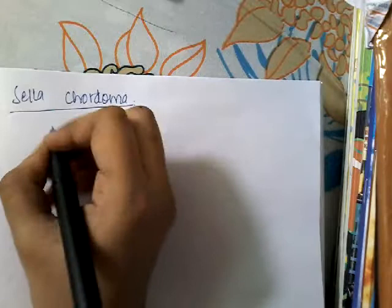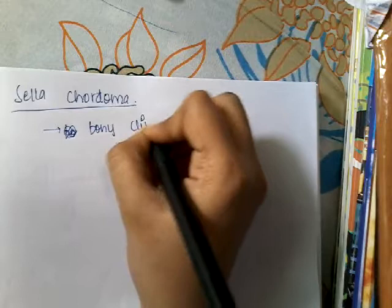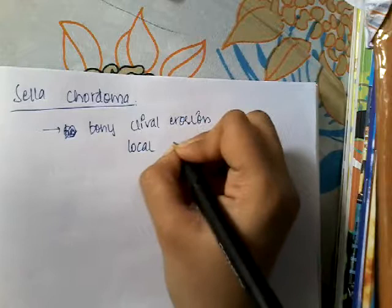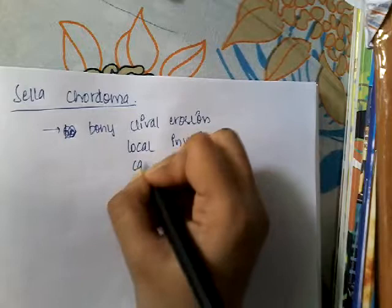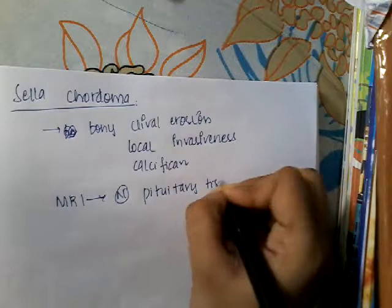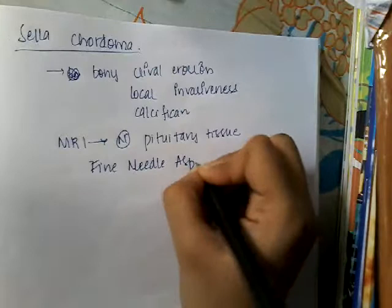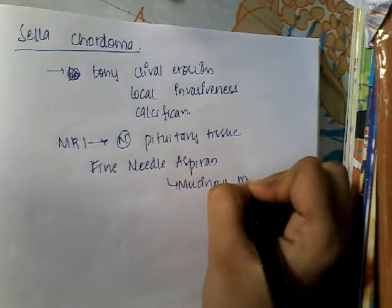First, let us learn about sellachondroma. Sellachondroma is a benign pituitary tumor which presents with bony clival erosion — the clival bone is eroded — and there is local invasiveness and calcification. On MRI, normal pituitary tissue is seen, which differentiates it from chondroma or other tumors. If you do fine needle aspiration, you see mucinous material.